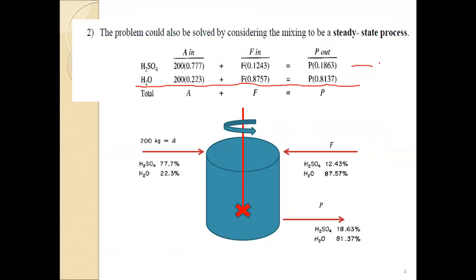One for sulfuric acid and the second one for water. The third or total equation cannot be used because it is not independent, it depends on the summation of equations one and two. But we can use it for checking our solution.